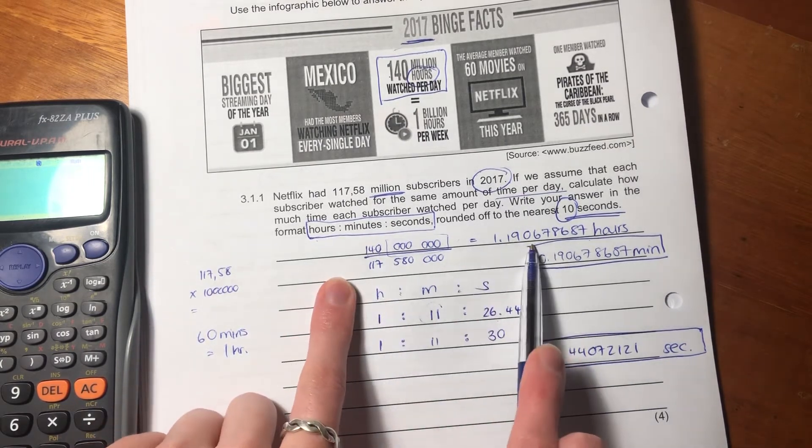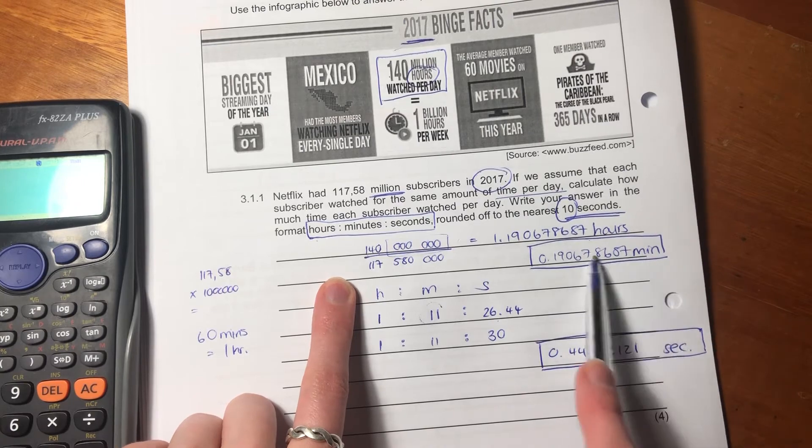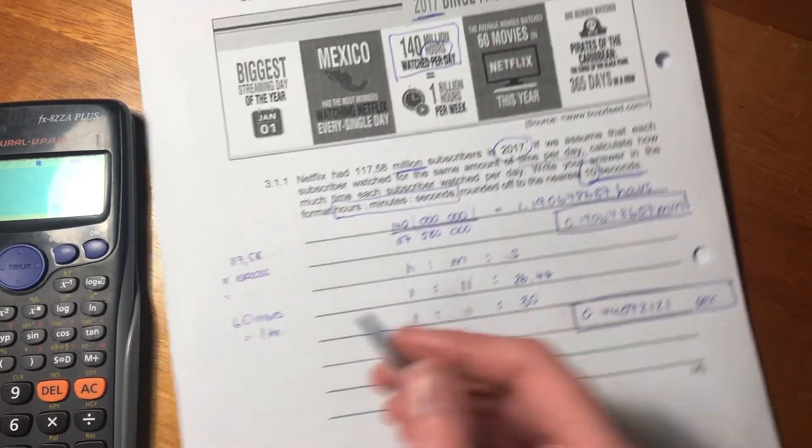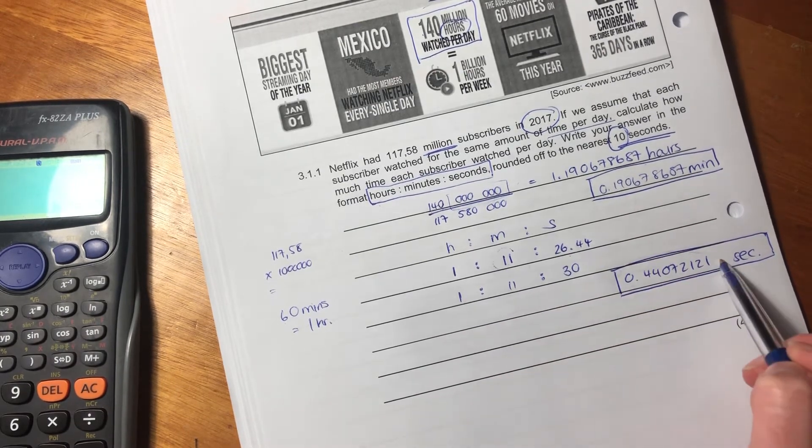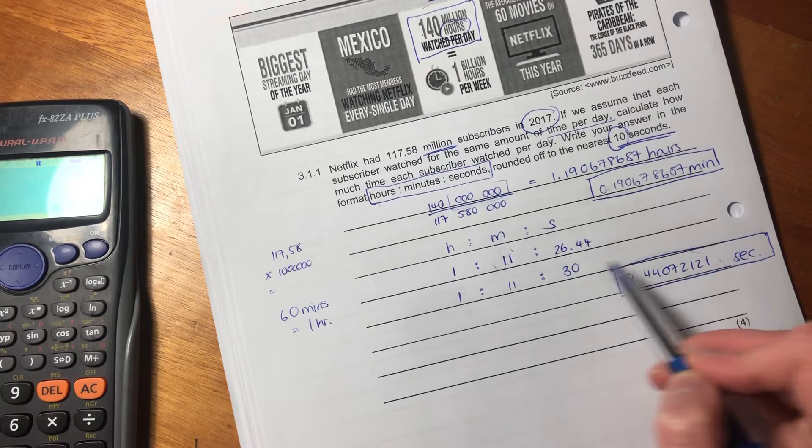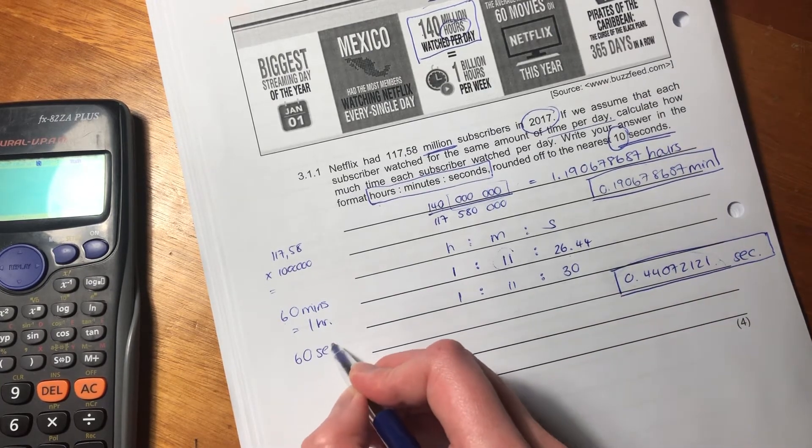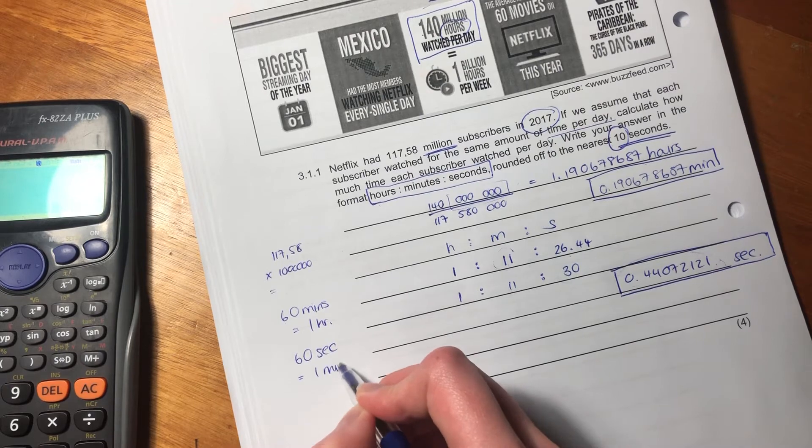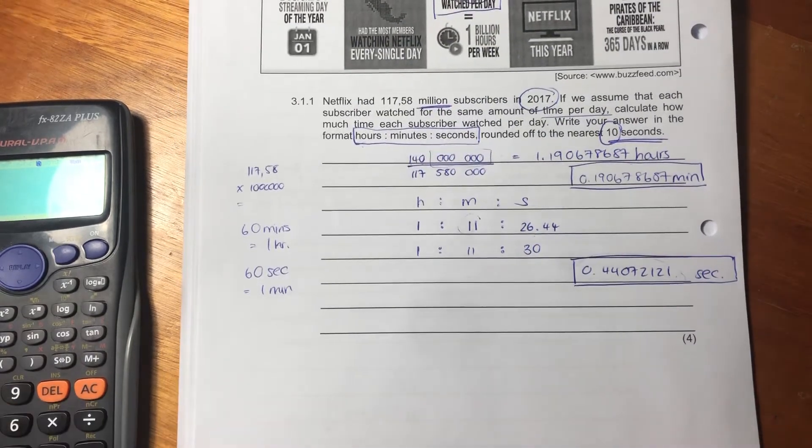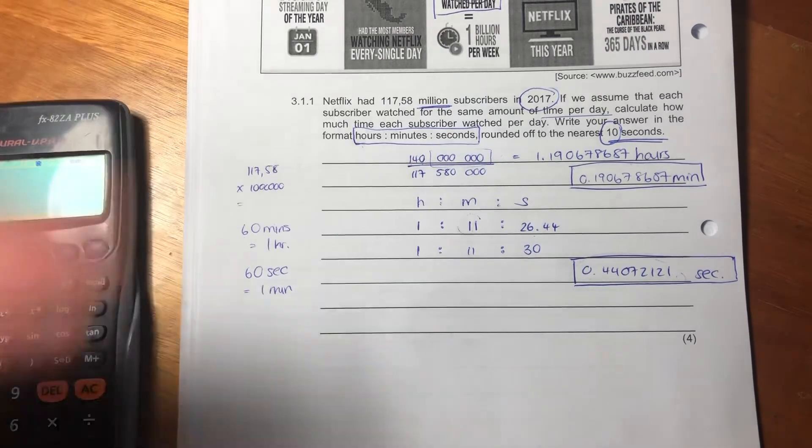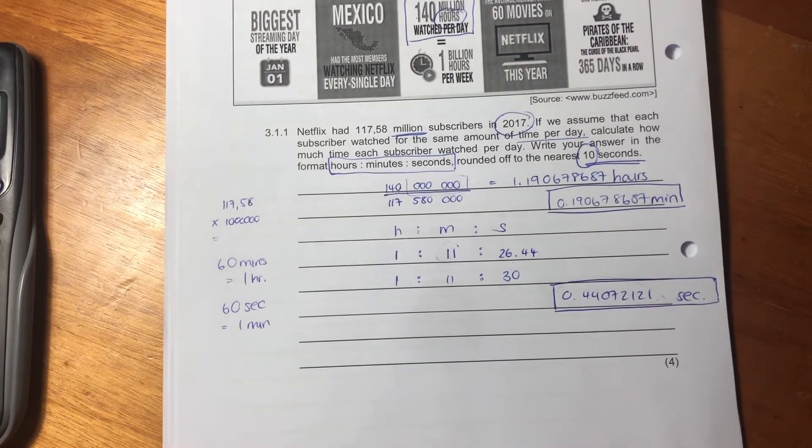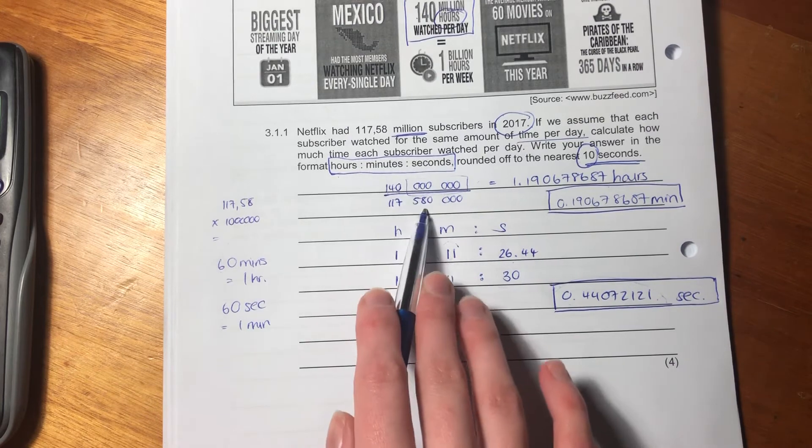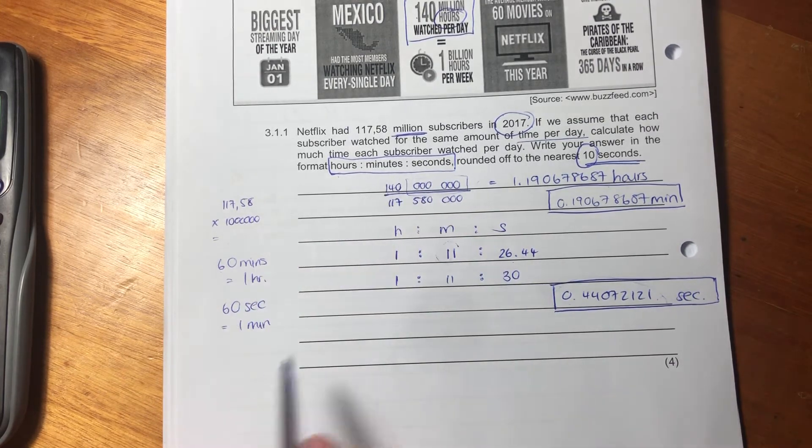So importantly, we worked out hours. We took the decimal. We times that by minutes. So we said there's 60 minutes in an hour. So we times this by 60 to get the 11. Then we went after this decimal, and we times that by 60 to get the seconds. So it's important to know your conversions. That's what they're fundamentally testing you here. They're testing whether you understand how many minutes are in an hour, how many seconds are in a minute. So if you don't get that, I'll go over that again. But fundamentally, it's about identifying what numbers you must use, writing them out correctly, and then understanding your conversions.